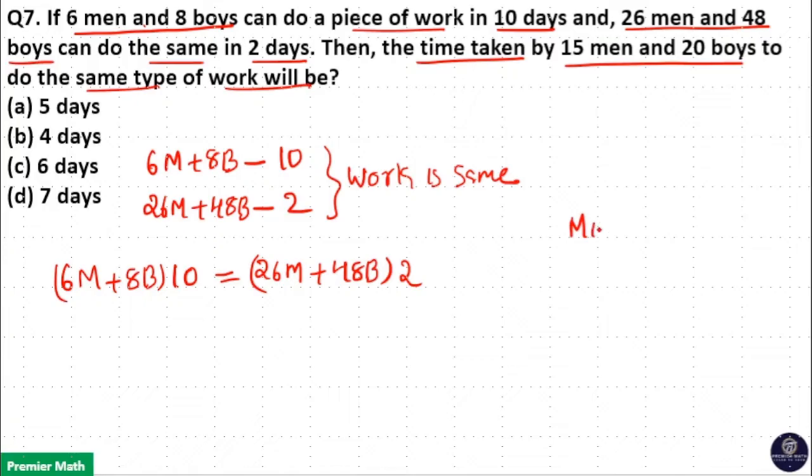Here we are using the formula M1D1/W1 = M2D2/W2. M1 is equal to number of men, women or children. D1 means number of days, months or years. W1 is the work rate.